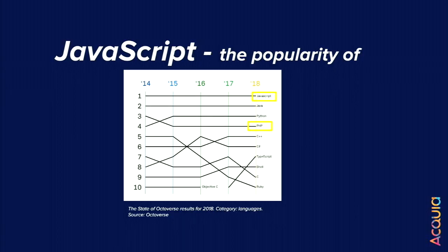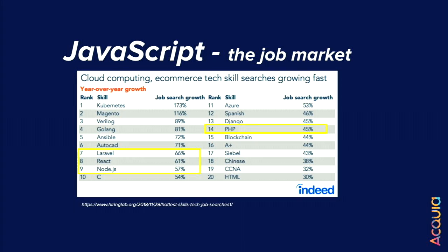That certainly seems to be the case from an economical standpoint. For the last five years, JavaScript — looking at the Octoverse, GitHub's look at language popularity — has been the most popular language for quite some time, and PHP has fallen below Python now. In the job market, Laravel still had more demand than React and Node at around 2018, but React and Node are directly below it and PHP is all the way at number 14. There is a demand from people who want to hire more React and Node.js developers, which influences availability in the resourcing market.